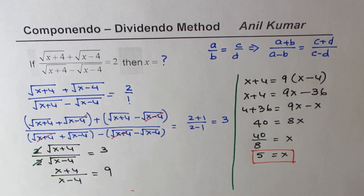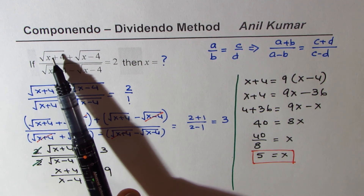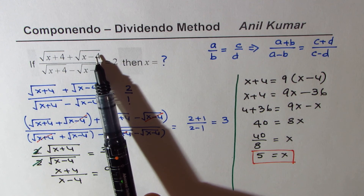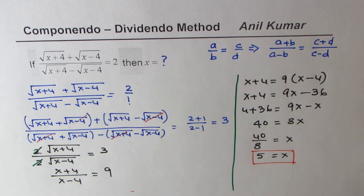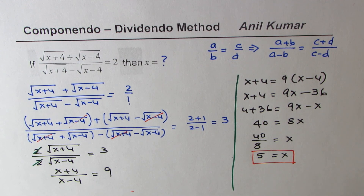You can always verify. If you substitute x equals 5: 5 plus 4 is 9, square root is 3; and 5 minus 4 is 1, square root is 1. So 3 plus 1 is 4, and 3 minus 1 is 2. 4 divided by 2 is 2. Correct! That is how we get this answer. I hope you understand and appreciate the technique. Feel free to write your comments and share your views. If you like and subscribe to my videos, that'd be great. Thanks for watching and all the best.